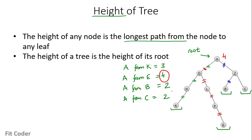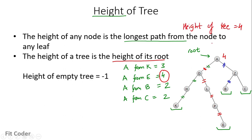The height of a node is the maximum distance from that node to any leaf node, and the height of the tree equals the height of its root. So in this example, the height of the tree is 4. There are some properties: the height of an empty tree is -1, and the height of any leaf node is 0, because the reference point is the leaf node itself.